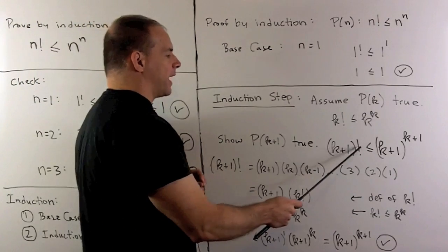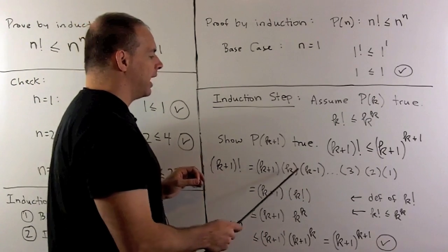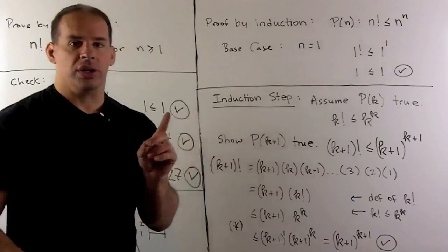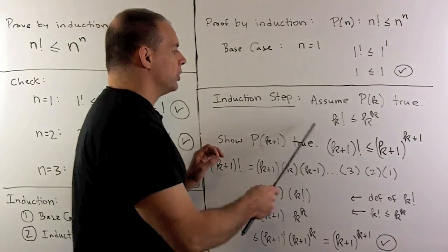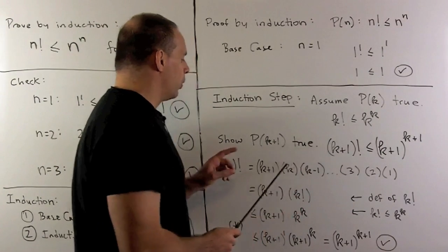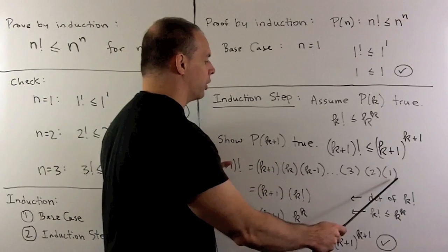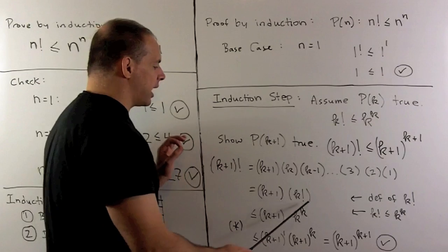So we'll start with k plus 1 factorial. I'm just going to write the definition out. Well, it's k plus 1, k, k minus 1, all the way down to 1. Then you'll notice, if I want to get k factorial to the picture, so we can use our assumption, well, if we forget about the k plus 1, what's left over is k factorial. We're starting at k, going all the way down. So that gets us to this step.